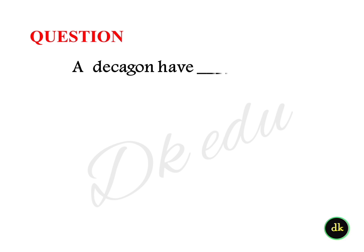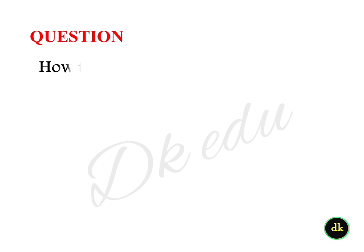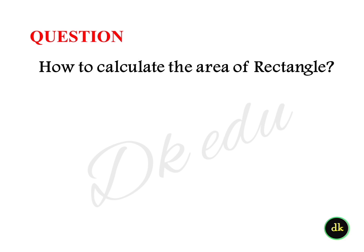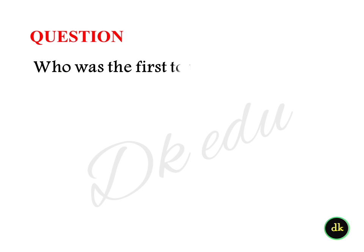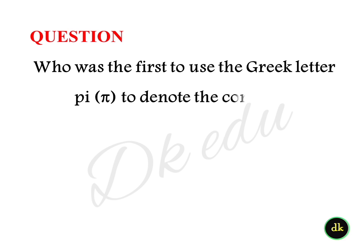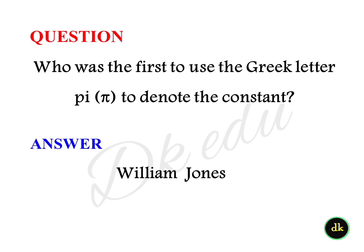A decagon has how many sides? Answer: 10 sides. How do you calculate the area of a rectangle? Answer: Length times breadth. Who was the first to use the Greek letter pi to denote the constant? Answer: William Jones.